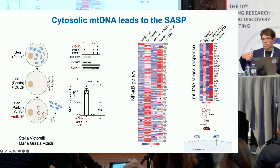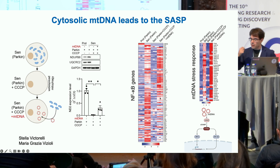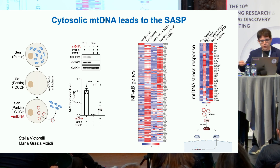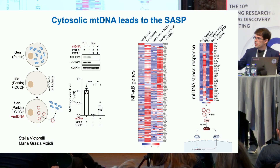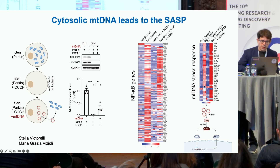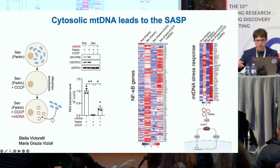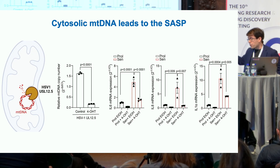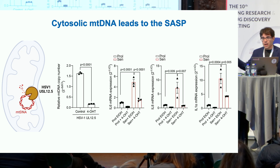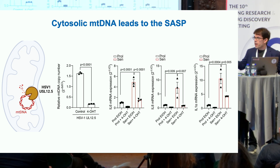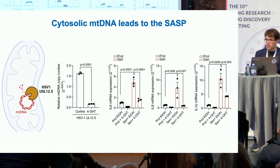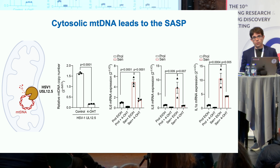Genes associated with the mitochondrial DNA stress response — specifically the interferon response regulated by cGAS-STING — also go up in senescence, down when we clear the mitochondria, and back up again when we reintroduce the mitochondrial DNA. We then used a DNase that degrades mitochondrial DNA, and applying this to senescent cells produced a suppression of the SASP, consistent with the idea that mitochondrial DNA is important for SASP induction.